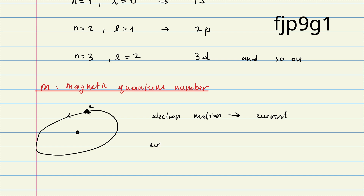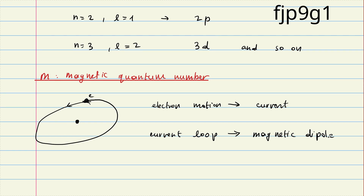If there is a current in a loop, that corresponds to a magnetic dipole. So this is exactly like a bar magnet, but a tiny version formed by a single electron. The magnetic dipole moment μ is what we want to calculate.